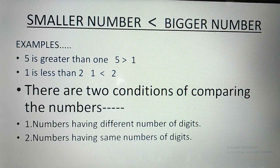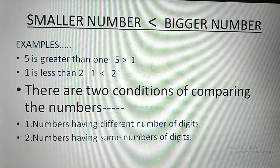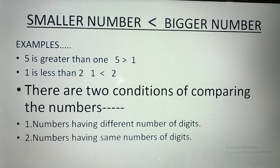Now, smaller number and the bigger number. For example, five is greater than one. Five obviously comes after one, so it is a bigger number. The open part of the sign (like a bird's beak) points towards five, and the pointed end towards one. Similarly, one is less than two — the pointed end goes towards one, the open part towards two.